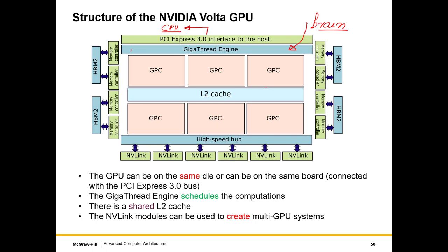The Giga Thread Engine handles the scheduling aspect — it's a very simple brain, more like a bird's brain. Then we have Graphics Processing Clusters, which are large collections of small cores. In the Volta GPU we have six of these, and we have a large amount of on-chip memory. Compared to CPU caches, GPUs are bigger and have more resources, so they have a big L2 cache. NVIDIA also allows connecting multiple GPUs together.